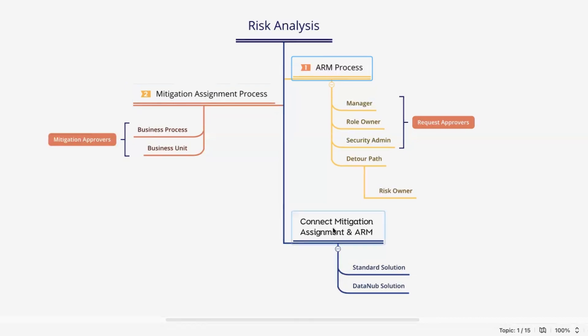That's what the third point is about. One important functionality introduced in GRC 12 SP8 is that SAP introduced a feature where we can see the link between the mitigation assignment workflow and the ARM workflow in the audit log. Meaning, at the stage where I find a risk and want to apply the mitigation control, instead of applying it directly, I can apply it in a way where this particular request will behave as a child of the ARM request. This information is already available in the audit log.